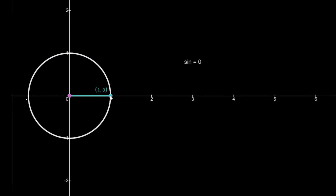Right now, the blue dot is sitting on the x-axis. The x-axis is defined as 0 degrees. The blue dot will move round to 90 degrees, then to 180 degrees, then to 270 degrees, and all the way round to the beginning again at 360 degrees, which is equal to our original 0 degrees.